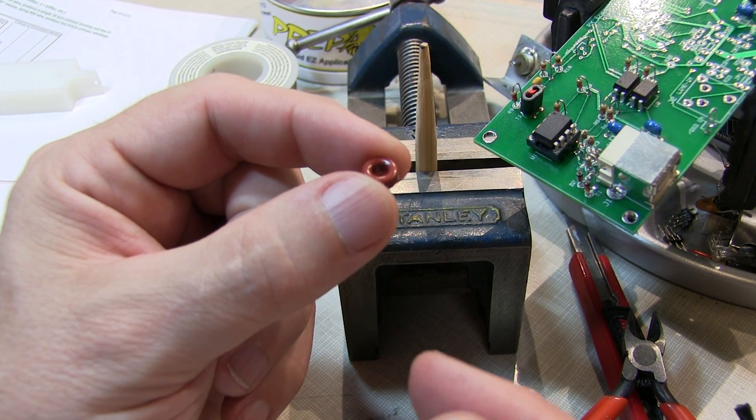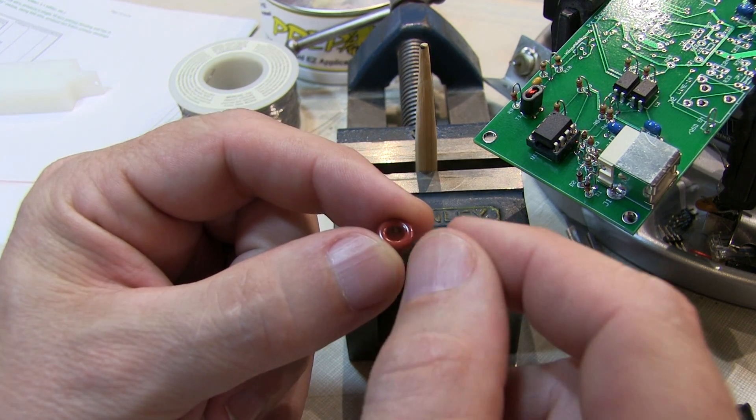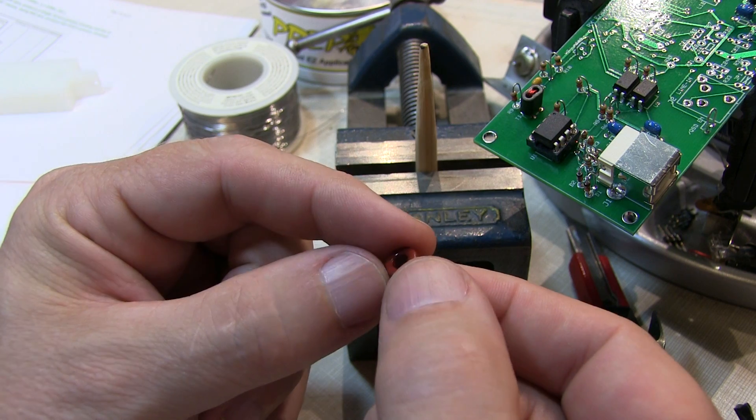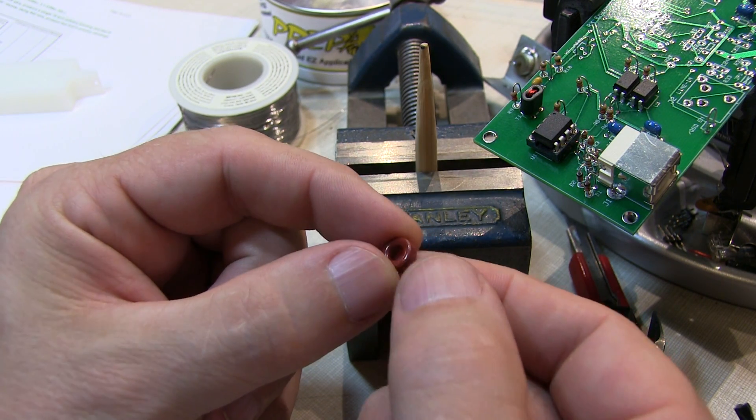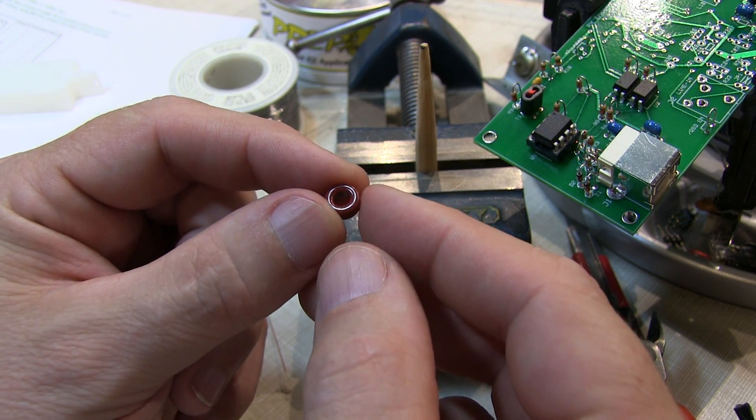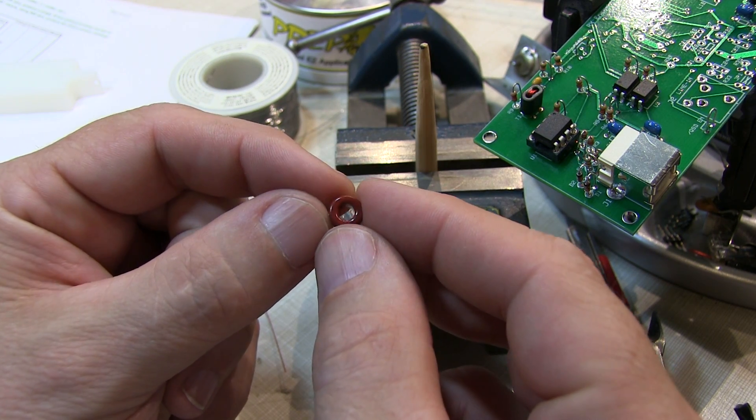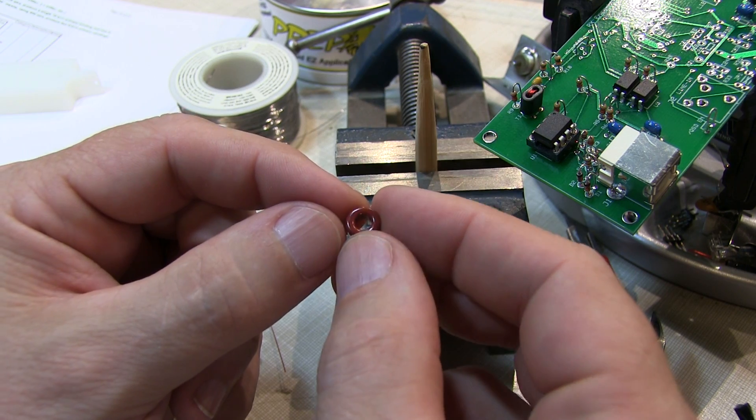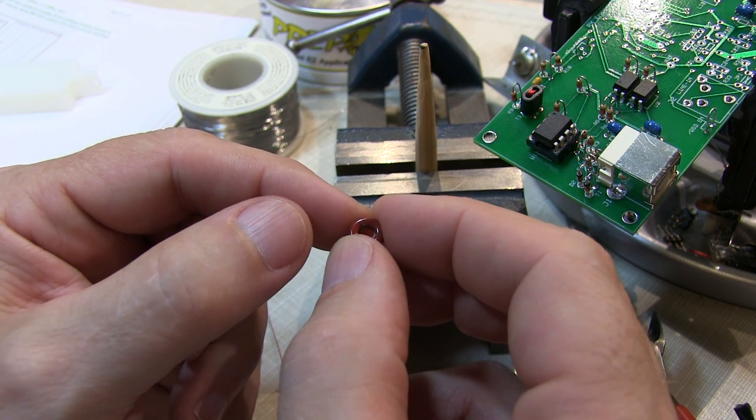The trickiest part about winding these toroids is holding them when you're fishing the wire through and trying to keep everything tight and do it all with just your fingers, because these toroids can often be quite small. So there's a couple of different methods that you can use to hold these when you're actually making the windings.